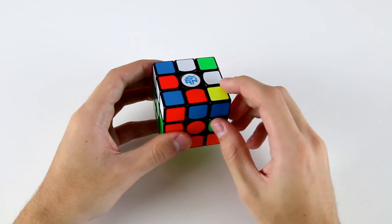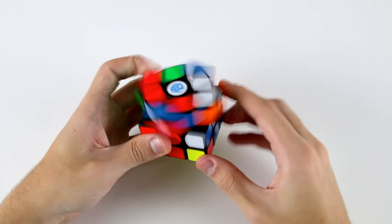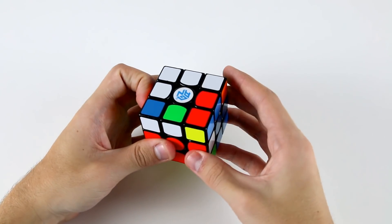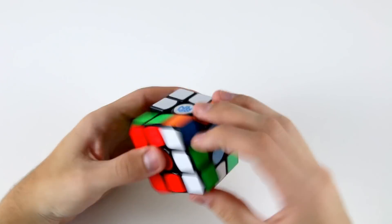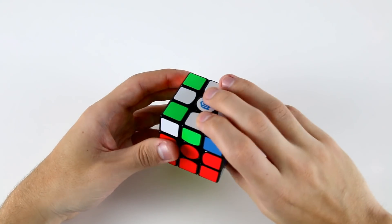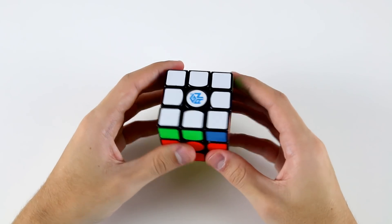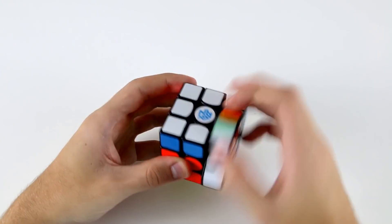Now I've got my last F2L pair here, so I'll rotate, do a u, insert the corner and then I could do a sledgehammer if I wanted to orient those last two edges, orient this edge and this edge, so that's what I'll do here. Then I've got my OLL and then PLL.